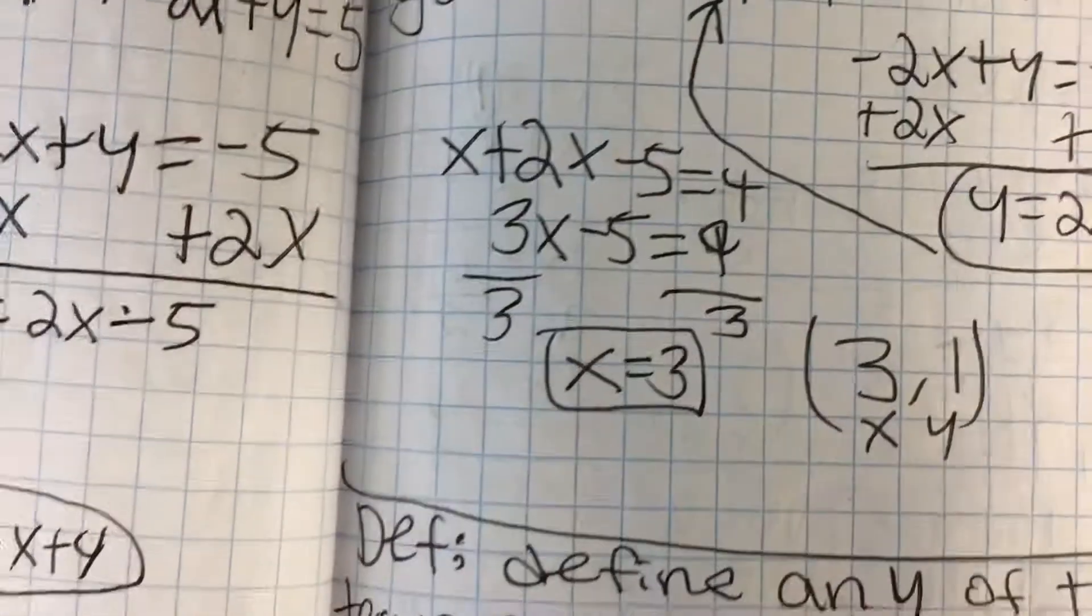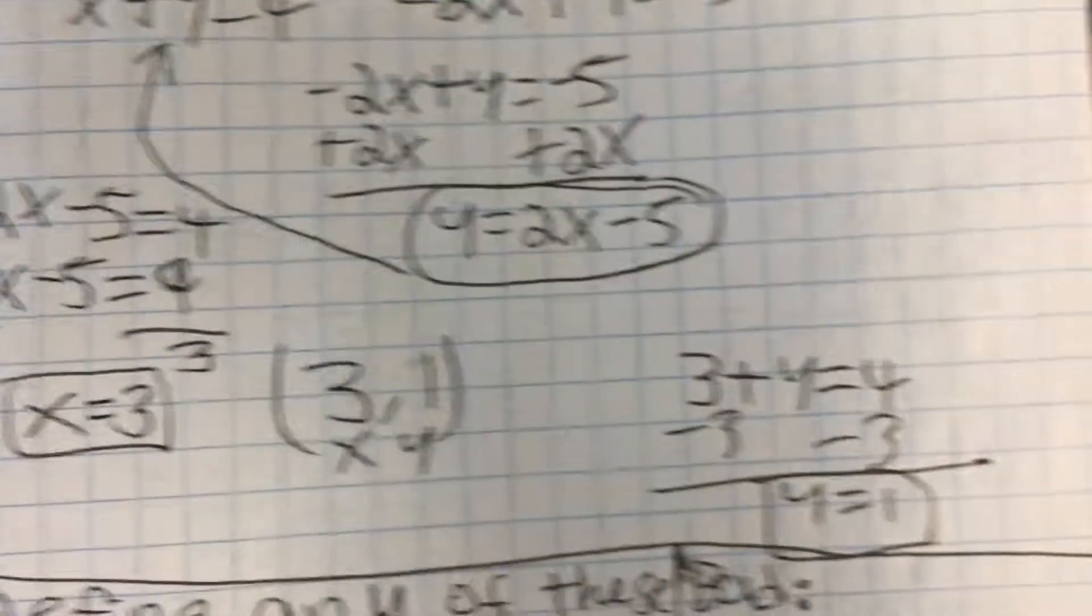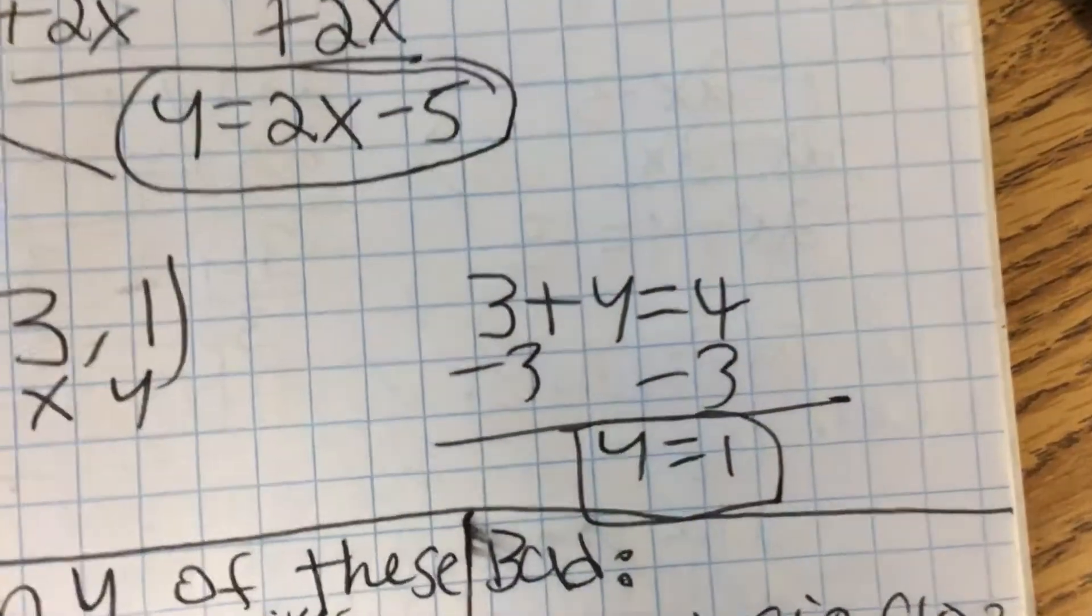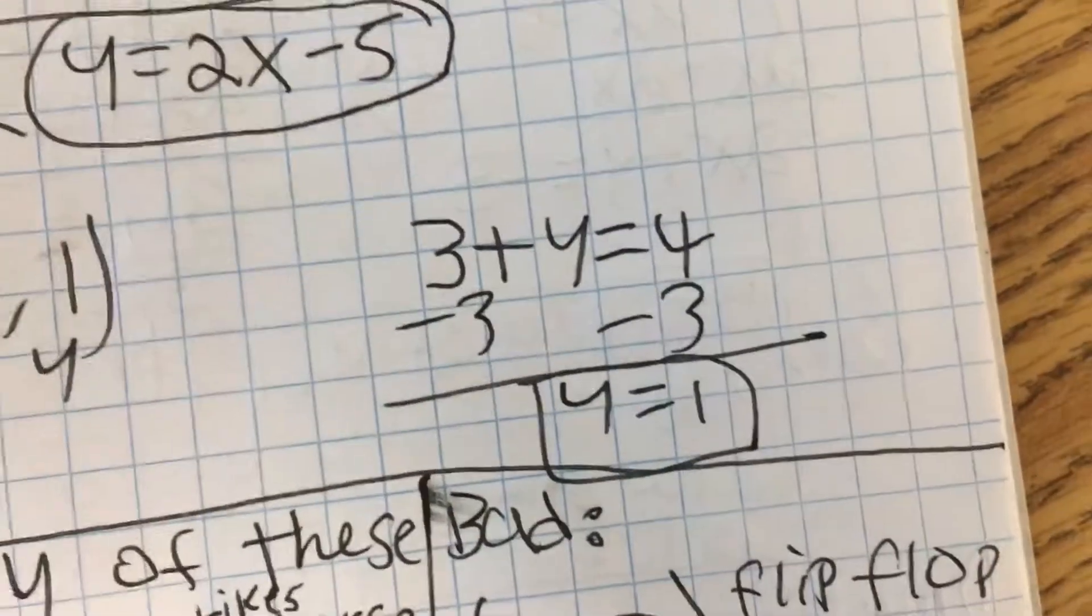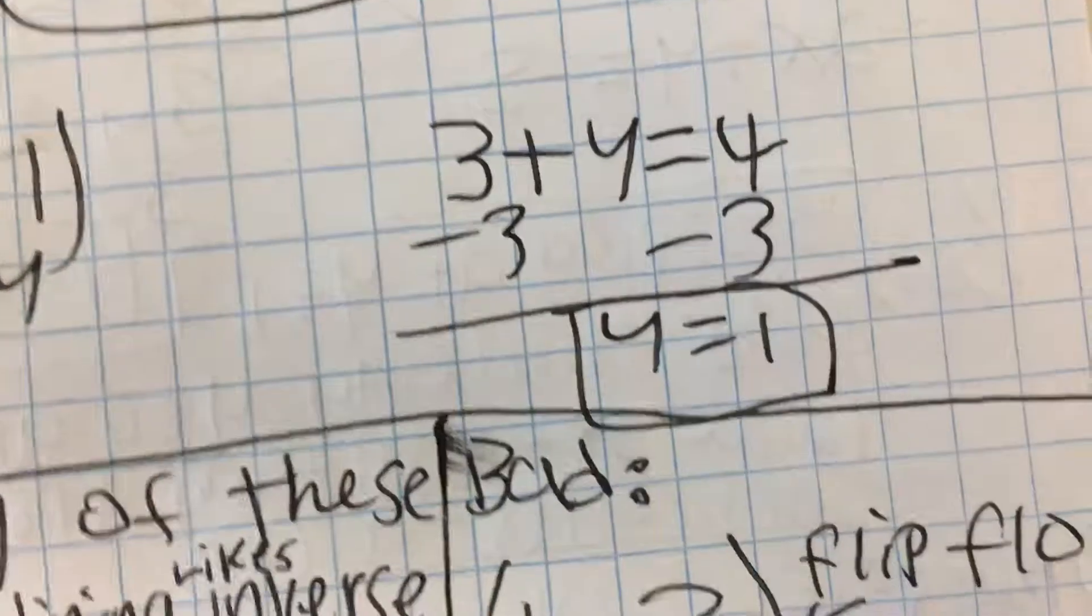Then plug it into this one, and you get x equals 3. And then to get the 1, 3x plus y equals 4, minus here on both sides, y equals 1, and it would be 3 comma 1.